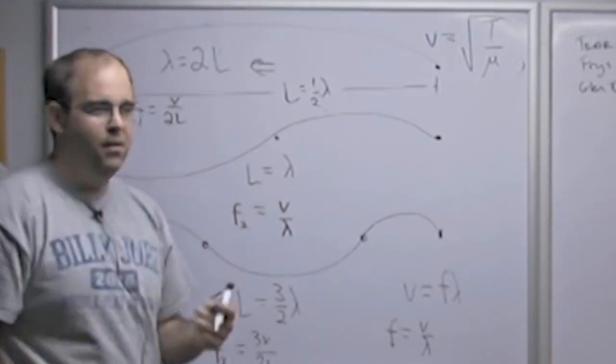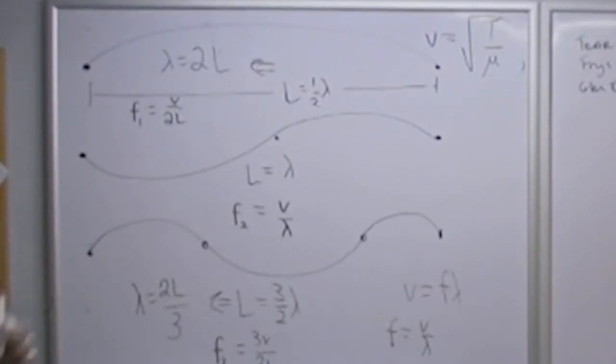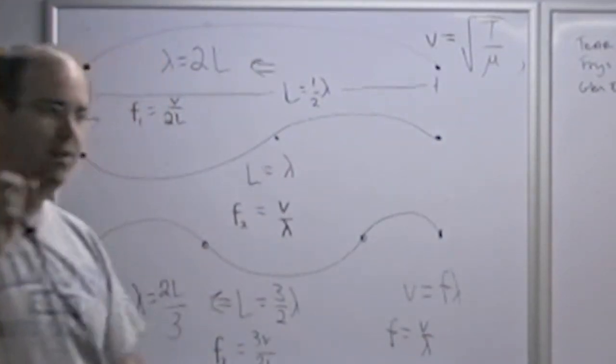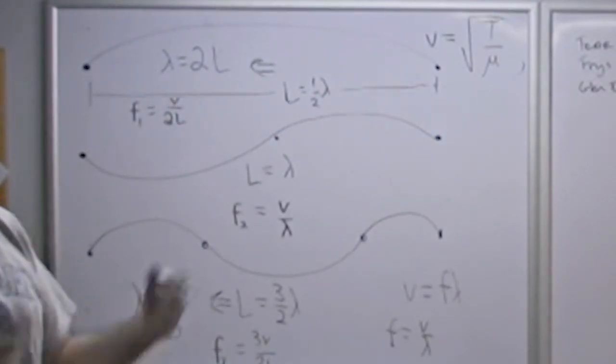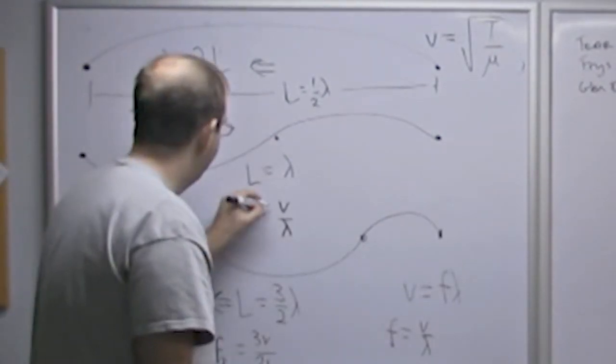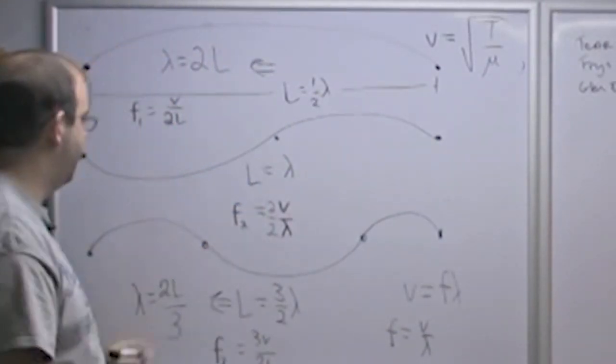Now I want to use one of my favorite math tricks in the world, which is that if you multiply anything by the number 1, you haven't changed anything. So I'm going to multiply this expression here by 1 and I'm going to do that by writing 1 as 2 divided by 2. 2 divided by 2 equals 1 and multiply it by 1. So I have 2 over 2 and I haven't changed anything.